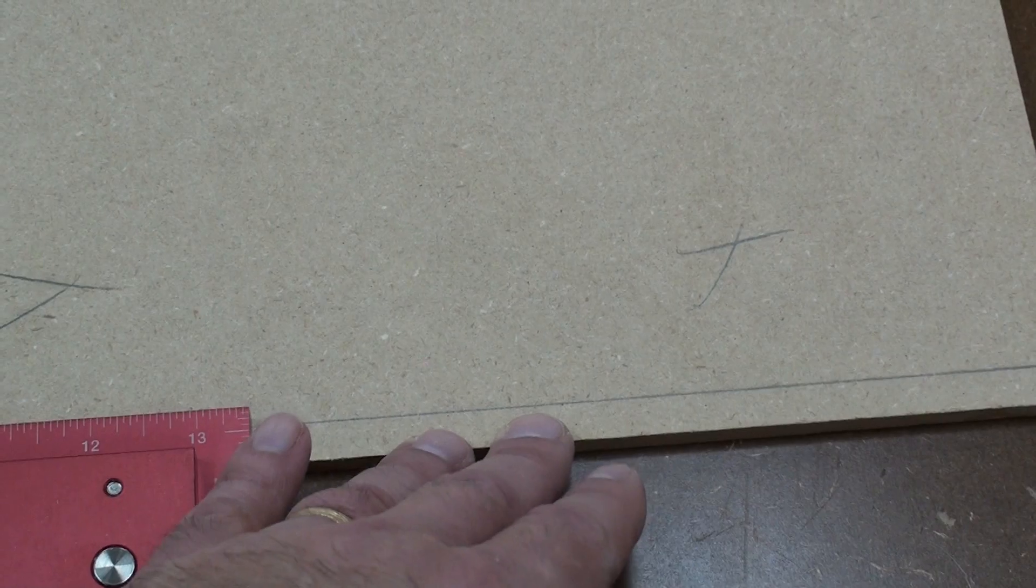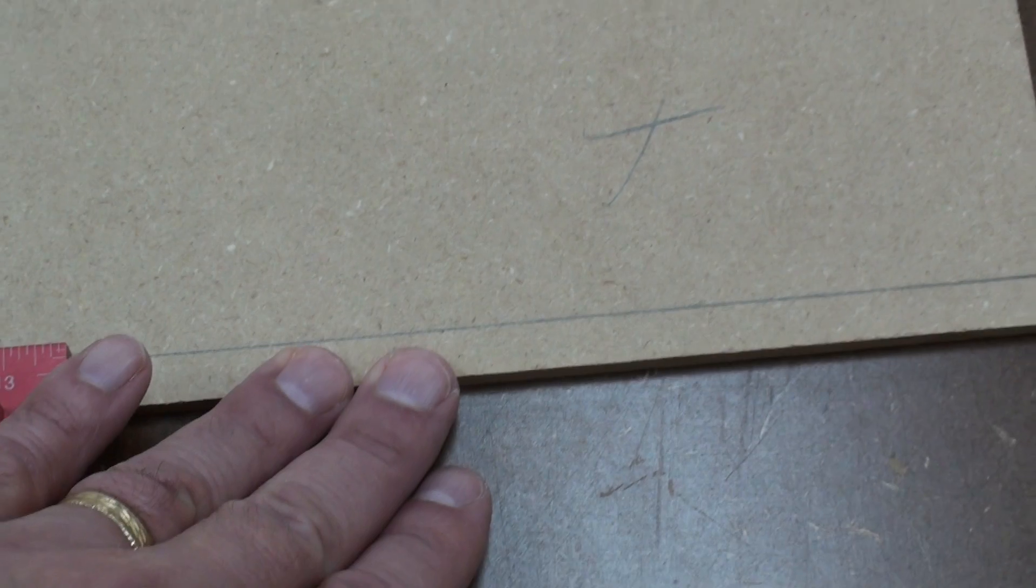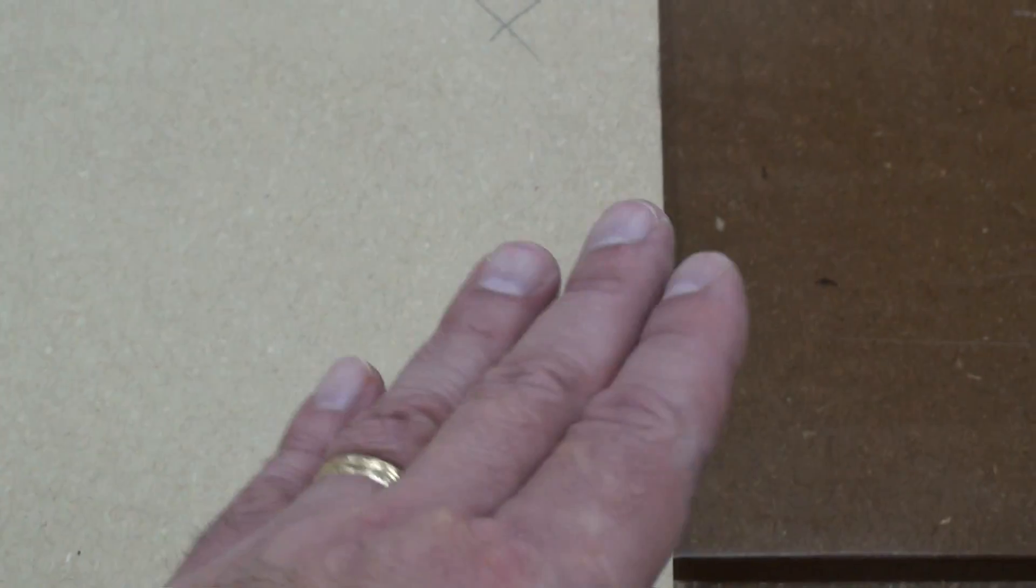So if I would take this sheet of MDF and cut it and put this side against my fence and go and make this cut, that cut that I would make on this end of the plywood or the MDF would be square parallel to the factory edge. But as soon as I would spin this sheet around and use this side or this side against my fence, and since neither one of these sides are parallel to this, what's going to happen is I'm going to make the cut on the one side of the plywood and it's going to be skewed, it won't be square. So what do I do?